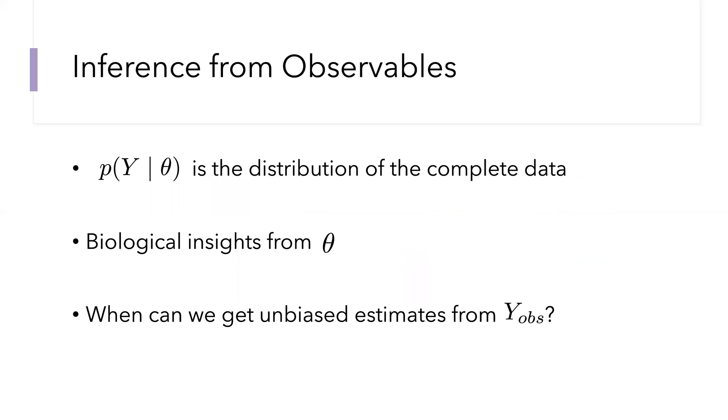The question we have now, given that there are missing values, is what can we infer from those missing values and how should we do it? We can think about theta being the parameters that govern the complete data, all of the peptide intensities in our sample. If we knew what theta was, then we could get all of the biological insights that we might like. Theta might tell us the differential abundances across two samples of the proteins, or theta might give us correlations between proteins that are useful for characterizing protein interaction.